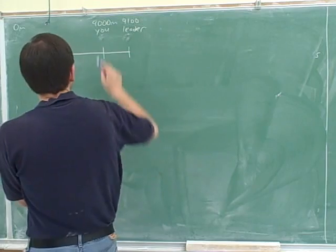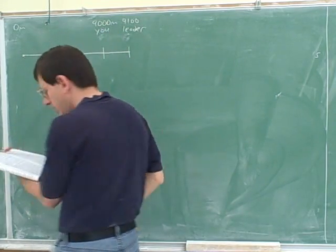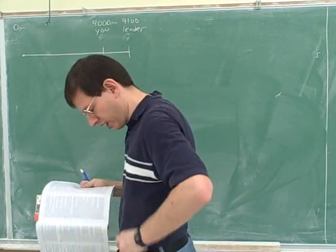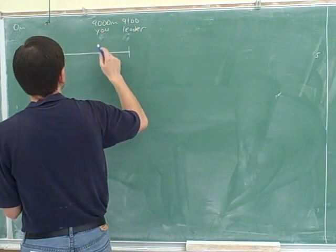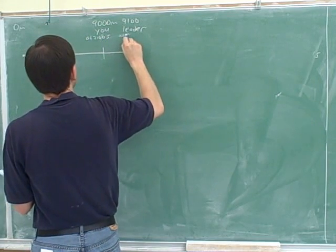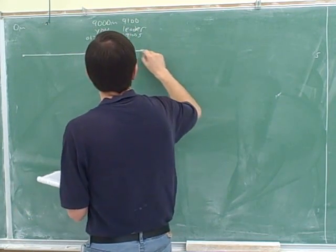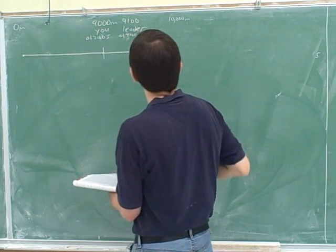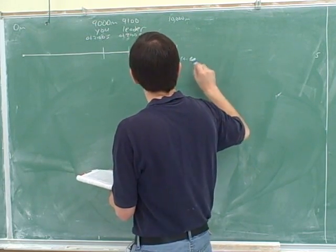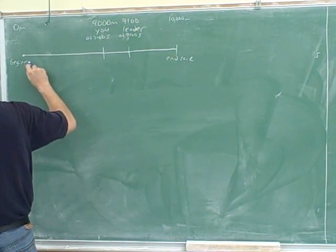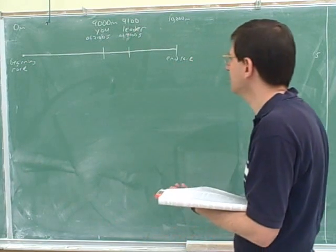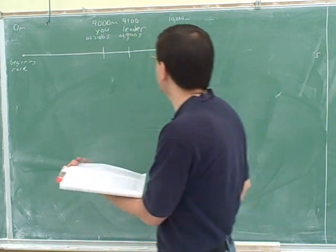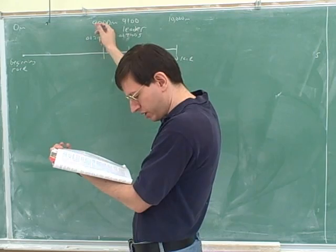Instead of calling that initial, I'll say this is you at 35 minutes. You also changed the minutes into seconds by multiplying by 60 — that gives 2,100 seconds. You noticed that the final position matters as well, which is at 10,000 meters at the end of the race. So after 35 minutes, you are at the nine-kilometer mark and you're 100 meters behind the leader.